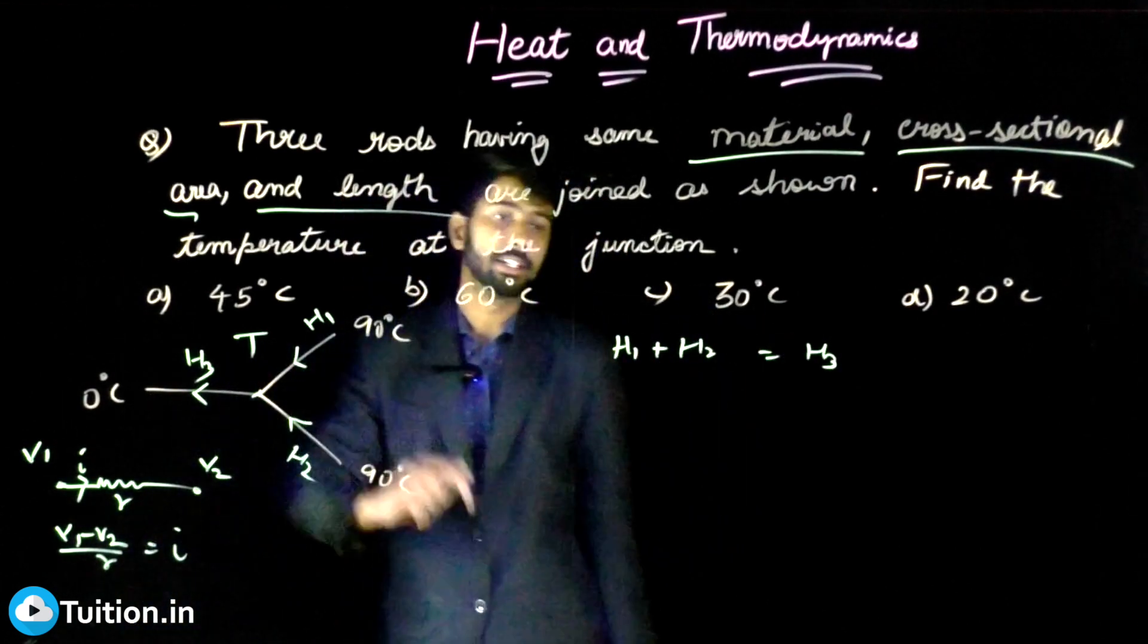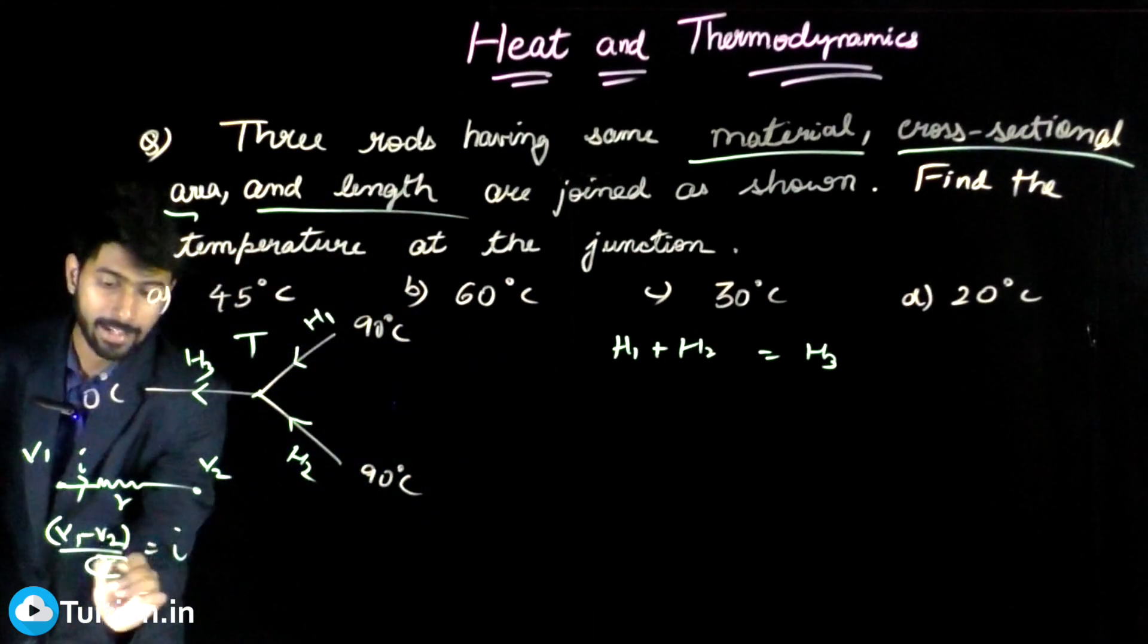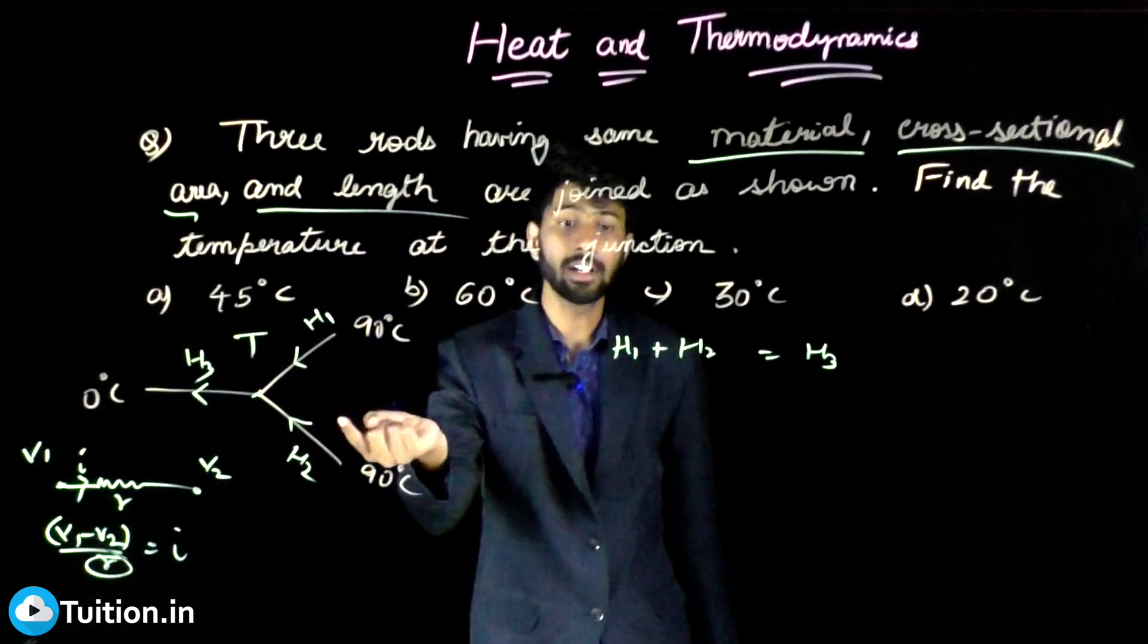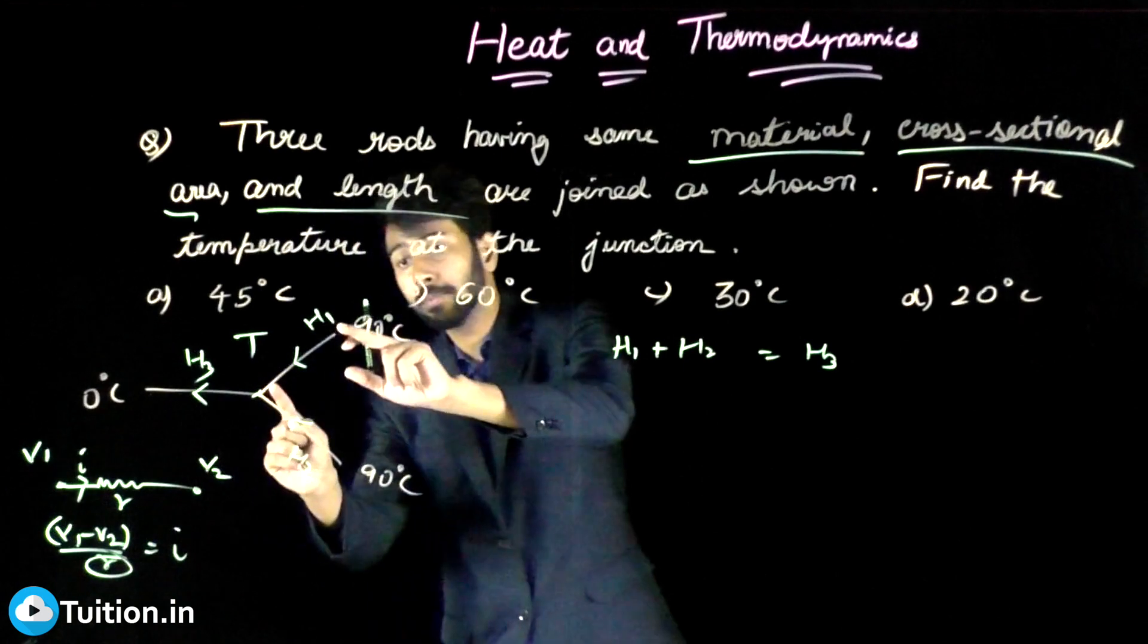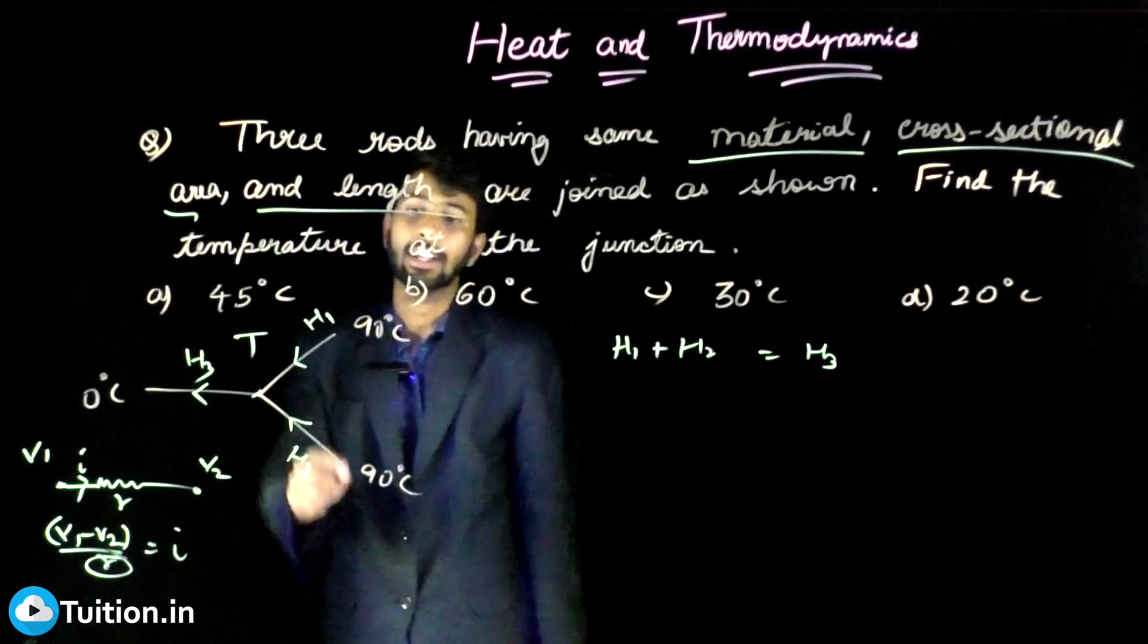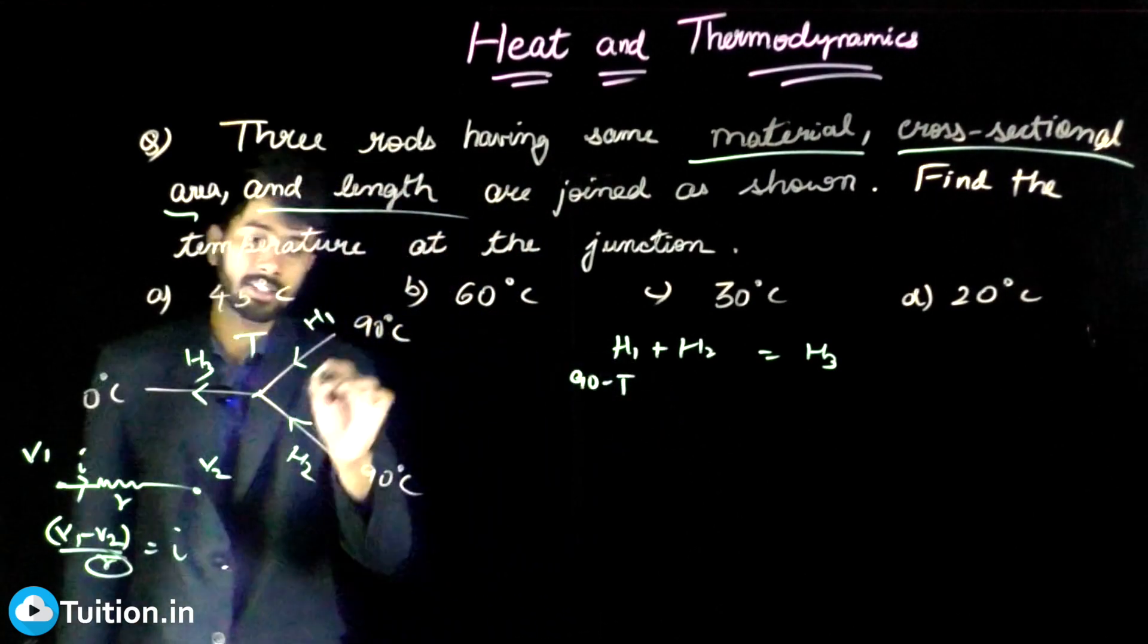Now, current is some potential difference by resistance. Here also, what is the potential difference? Here it is V1 minus V2. Here, the potential difference is the difference of temperatures. So H1 is nothing but 90 minus T. Let the resistance of this rod...